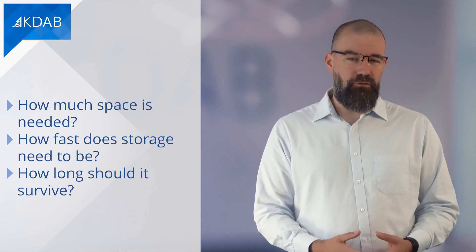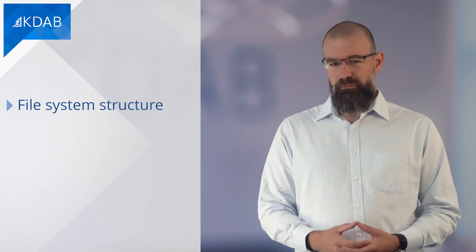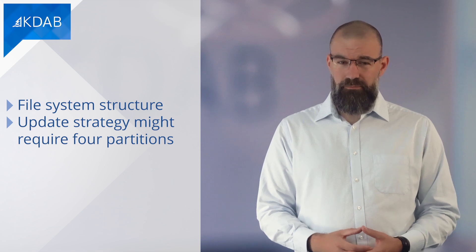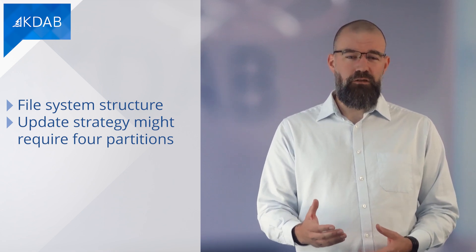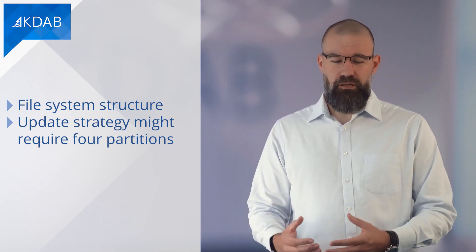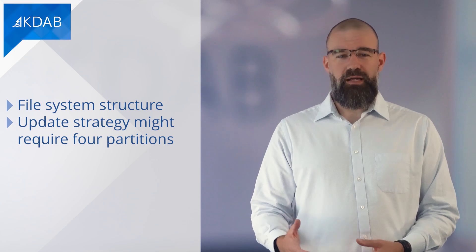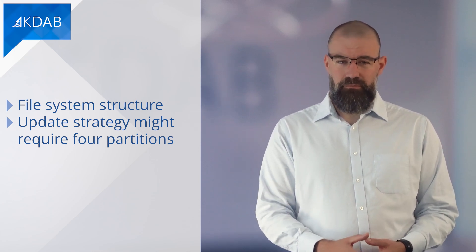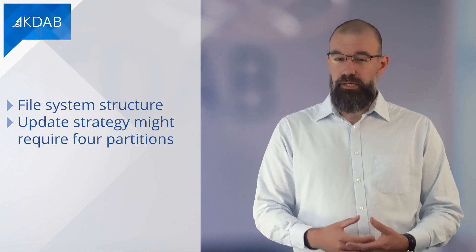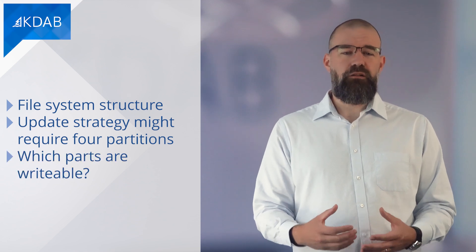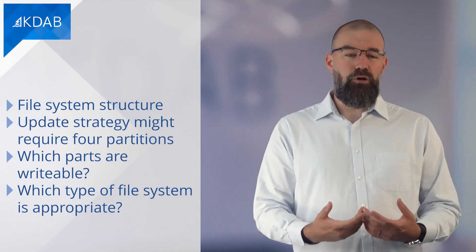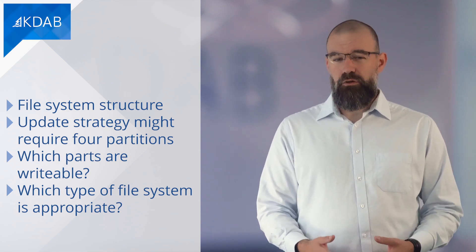From a software point of view, you need to think about the structure of your file system. For example, your update strategy might require four partitions: A and B partitions so that your updates can get installed on one while still preserving the previous working version on the other. You might require a data partition to preserve user data, and a service partition which might be used to rescue your device if something really goes wrong. You should consider which parts of your file system should be writable, and which type of file system is appropriate for the intended use of each volume.